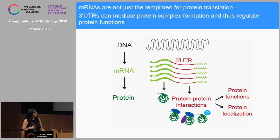The 3' UTR is the region between the stop codon and the poly-A tail. I hope to convince you today that 3' UTRs actually have important regulatory roles — they can determine what the protein interaction partners of the newly made protein are, and this can determine protein functions and protein localization.